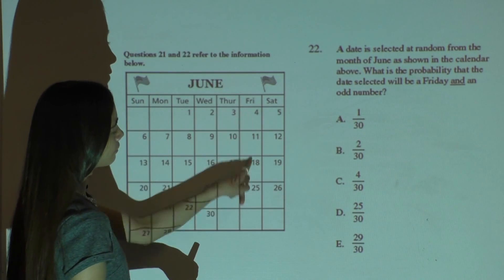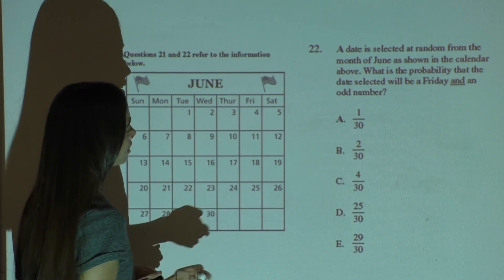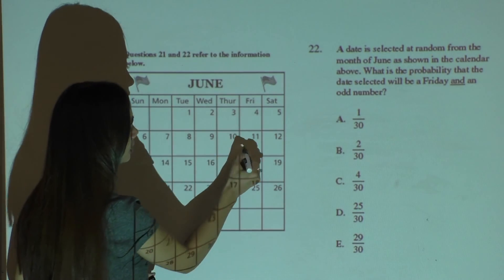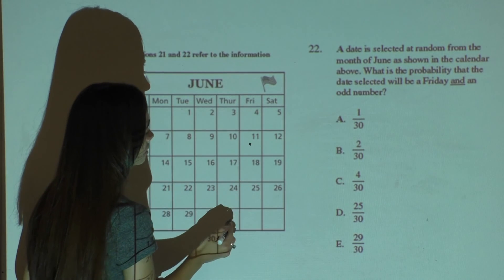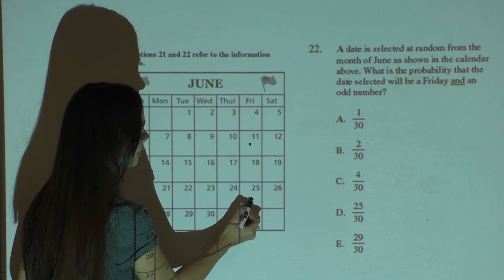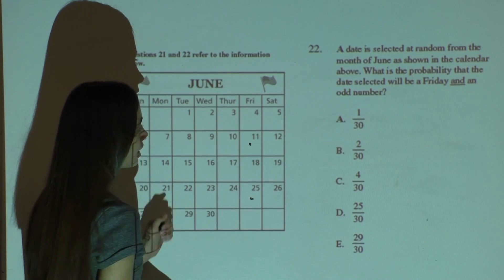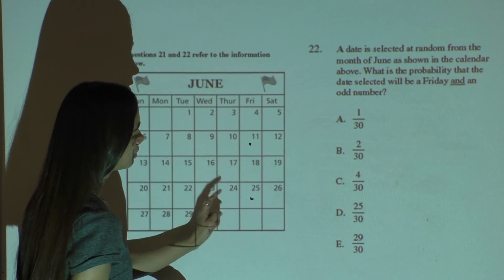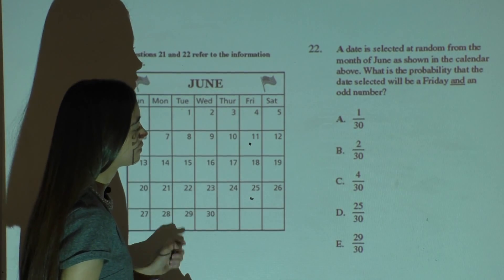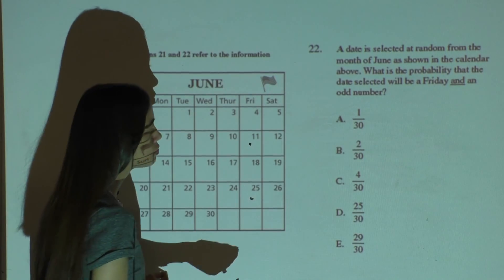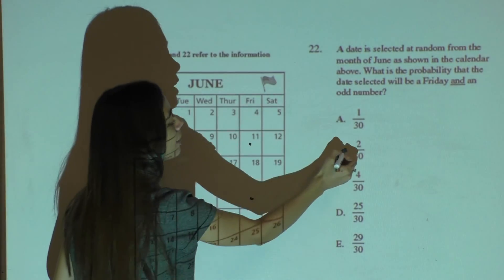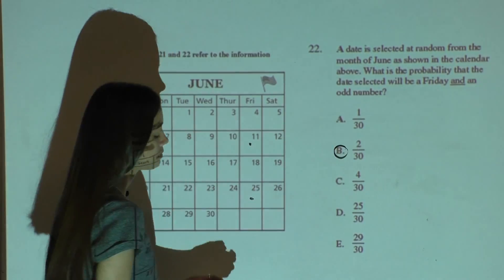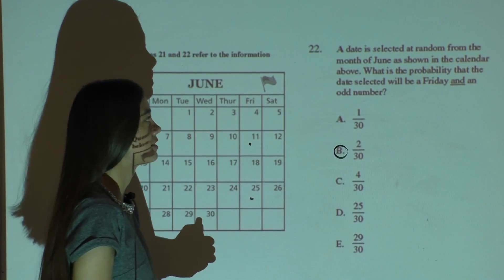You would go to the Friday section, and there are only two numbers that are odd and on a Friday — that's the 11th and the 25th. So that's two possibilities out of 30 days, which is why your answer is B.